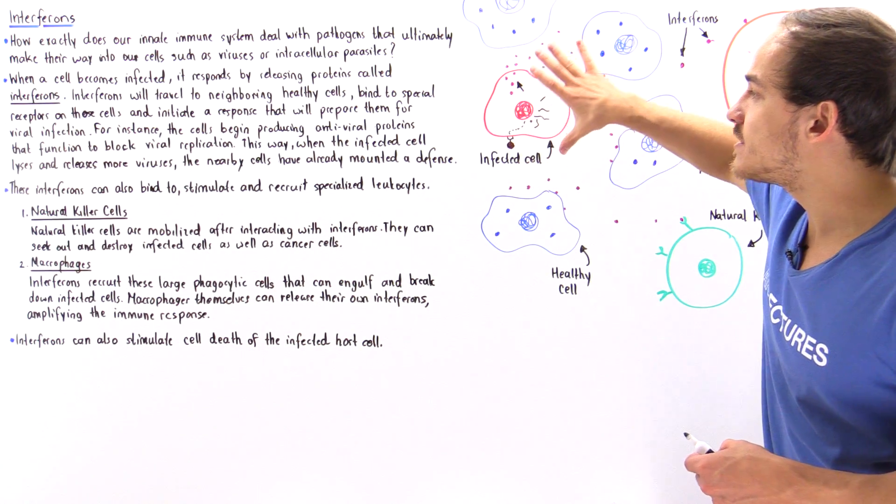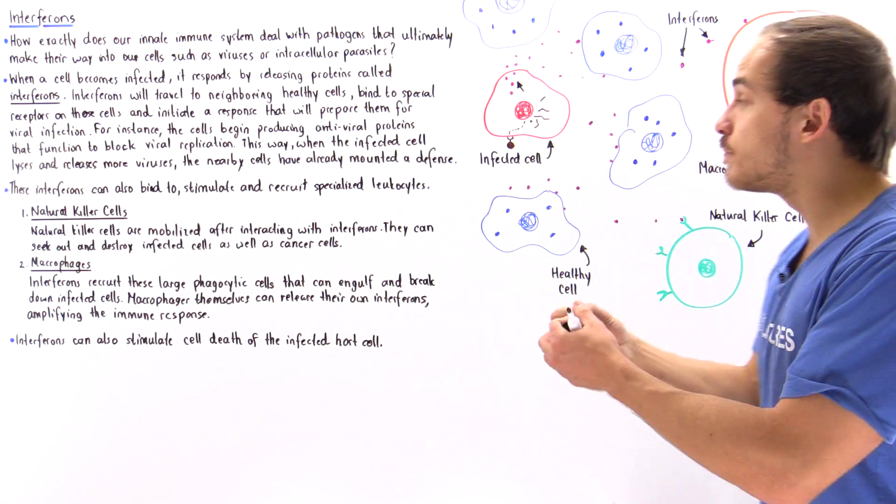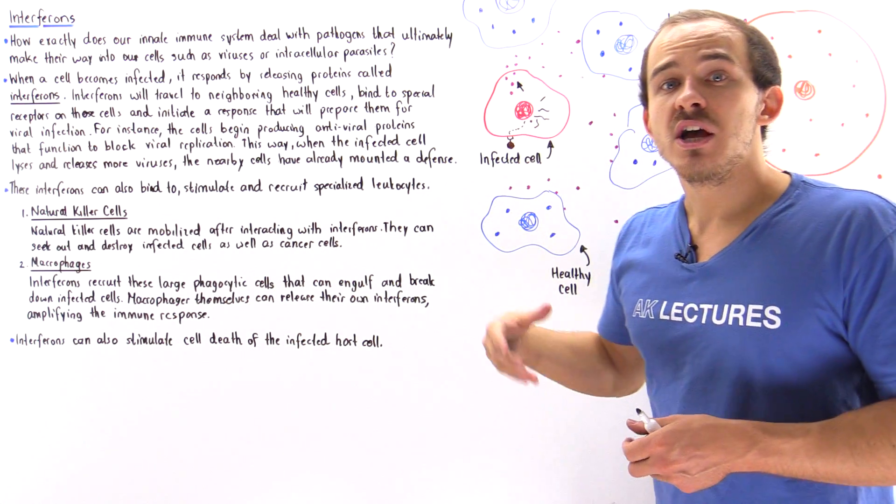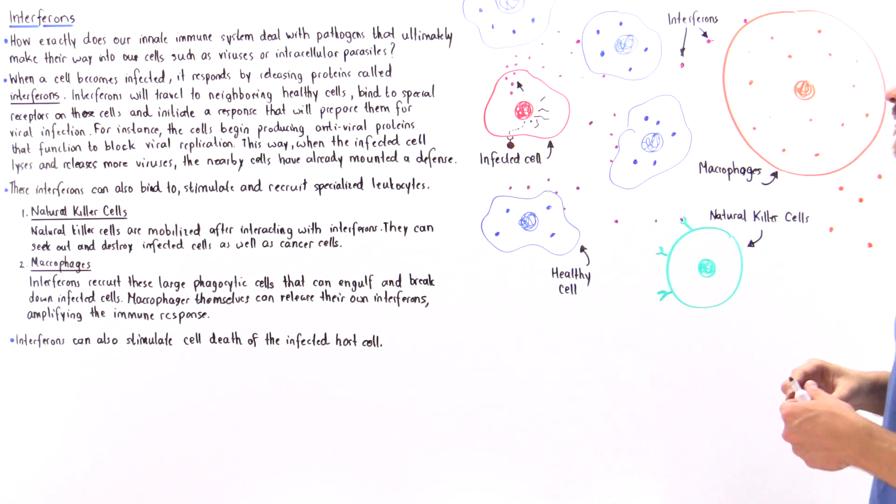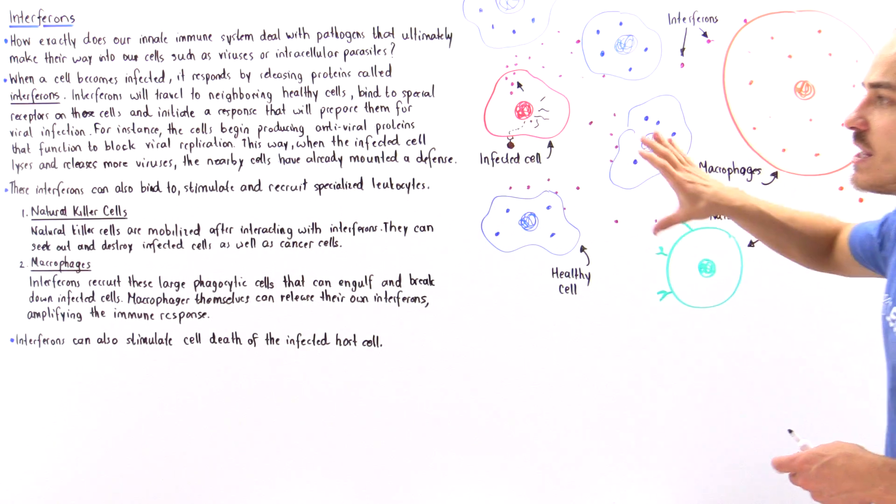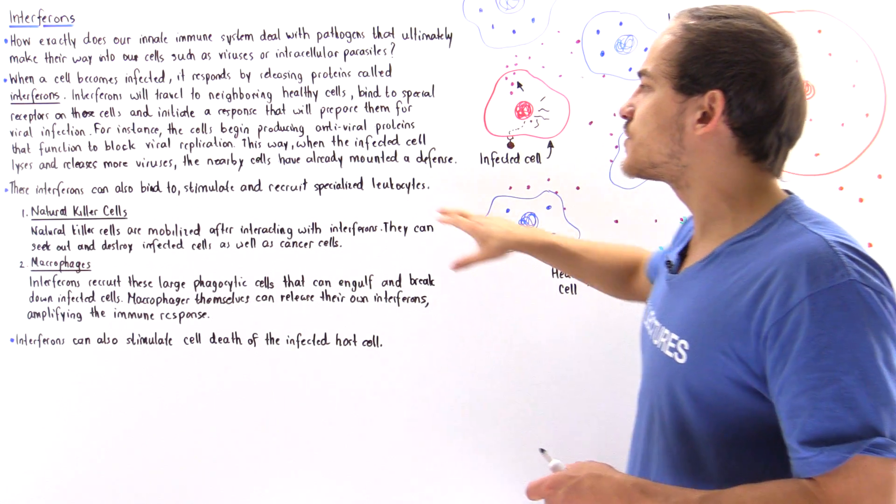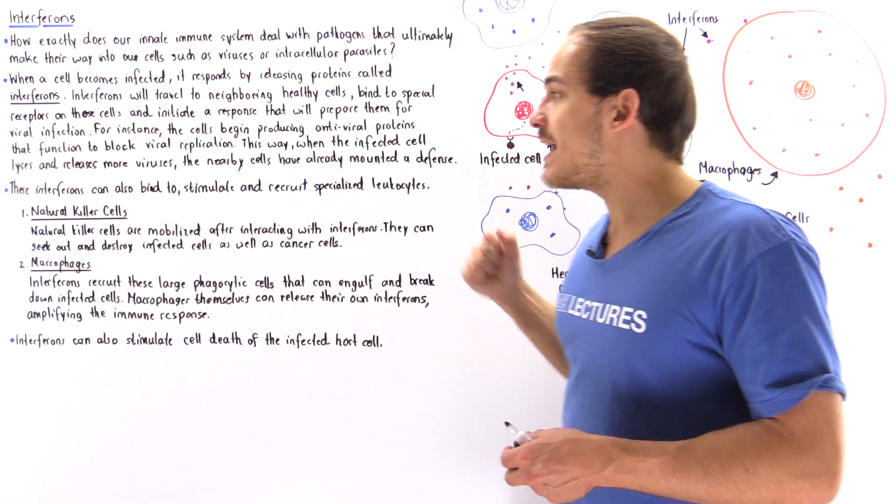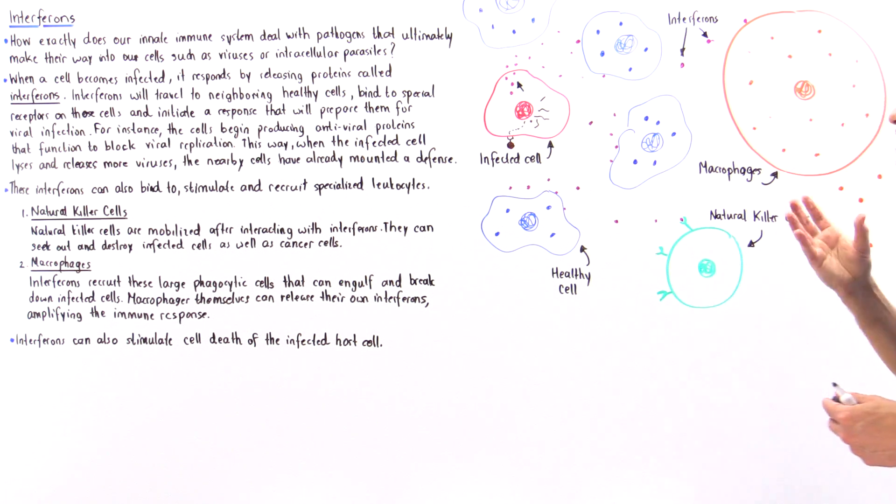They block viral replication from actually taking place. So when this infected cell actually lyses, it breaks open and releases the newly formed viruses and these viruses eventually make their way to these healthy cells. These nearby healthy cells have already mounted a defense and are ready for that viral attack.